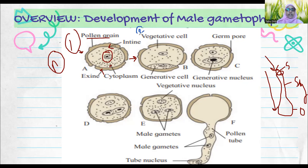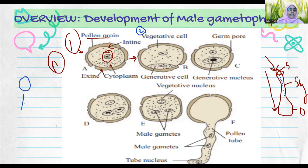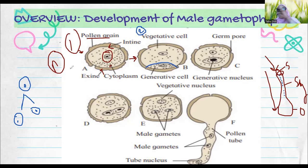The first structure is the pollen grain — you have the intine, the exine, the cytoplasm, and the nucleus. It is a normal haploid pollen grain with half the number of chromosomes and one nucleus. In the next stage, once the pollen has stuck to the stigma, it will undergo division — division of the pollen grain within the cytoplasm only. It will not result in two completely separate cells. An unequal division takes place within the cytoplasm.